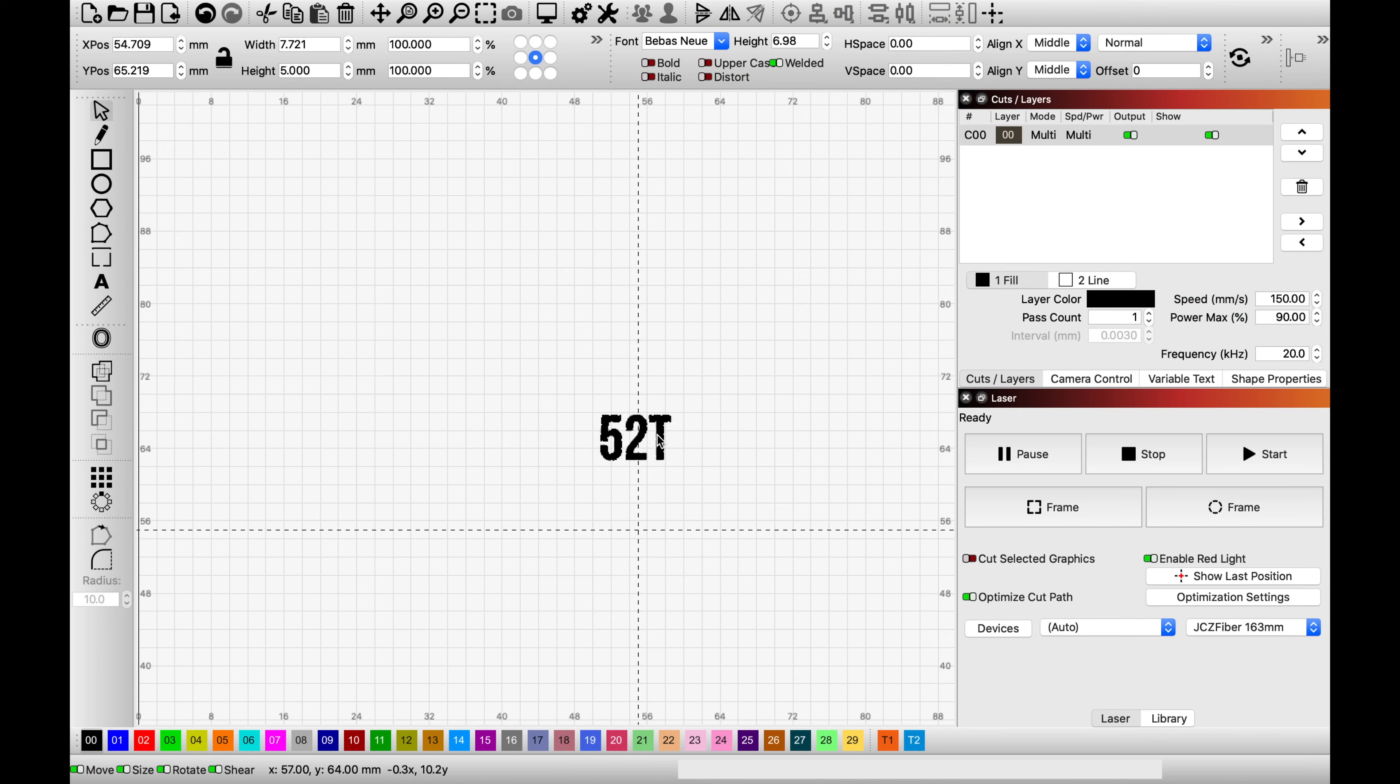This is Lightburn. I'm not going to give you a tutorial on it, but I figured it couldn't hurt to have a quick look. All I've done is create a text box with 52T in it and I've selected the settings that I want for the laser.